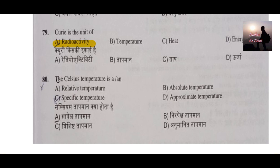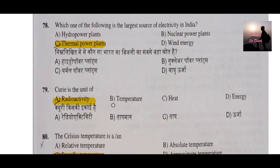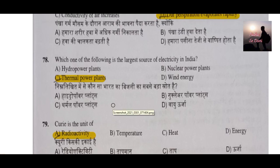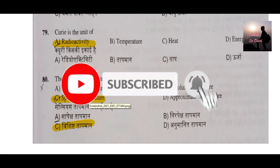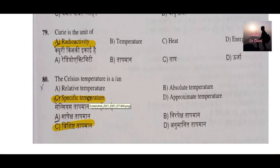Question number 80: Celsius temperature is what — relative, absolute, specific, or approximate temperature? It is a specific temperature. The Celsius scale is used to measure specific temperature. That is how we have discussed all 40 questions of Part B. If you have any doubts, ask in the comment section. If you think a question's answer could be different, post it with a proper source. Do subscribe to the channel for notifications of upcoming videos. Gyan rakhiye, dhanyavaad.